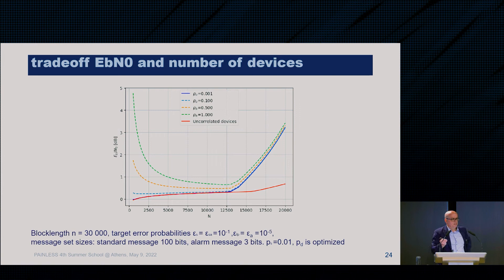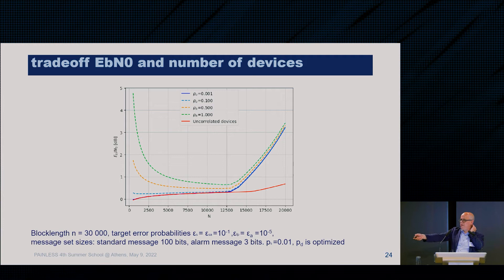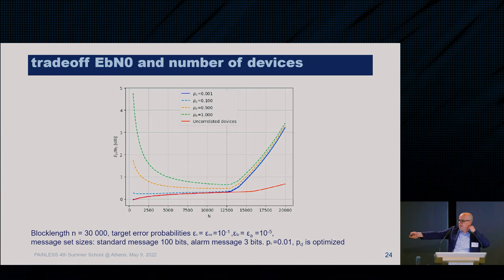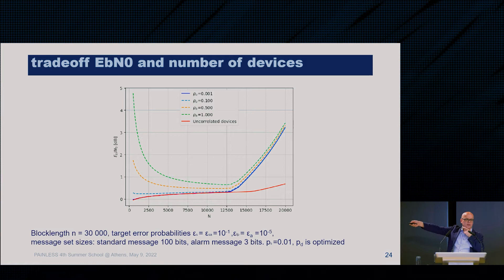This is the most important graph. The red line is Poliansky's baseline for pure massive access. Adding the alarm: if the alarm occurs with very high probability but few nodes send it, the required Eb/N₀ is high because they must transmit with large power for high reliability. As the number of devices increases, more devices push the message through, the required power decreases to a minimum, and then multi-user interference from standard messages starts to kick in.